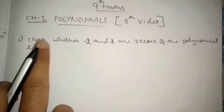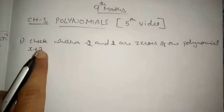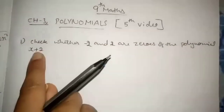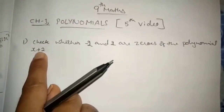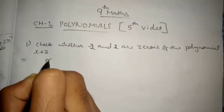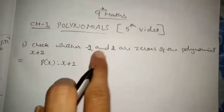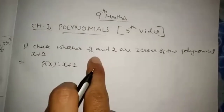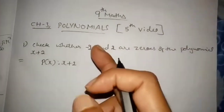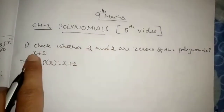First question: check whether minus 2 and 2 are zeros of the polynomial x plus 2. So you have to check whether they are zeros of this polynomial. We can also say 'root' instead of zero. So how to check whether minus 2 and 2 are zeros of this polynomial.